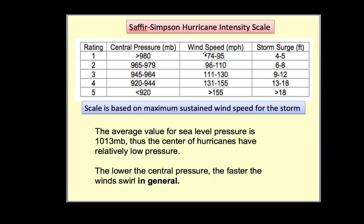Wind speeds greater than 74 miles per hour are required to be classified as a hurricane in the first place. If you have wind speeds below that, in this kind of system it's called a tropical storm. Once you get into 75 miles an hour or so, you're rated as a hurricane class 1. As you get up to 100 miles an hour you're around class 2, going up to the strongest category 5, which will have wind speeds of about 155 miles an hour or greater.